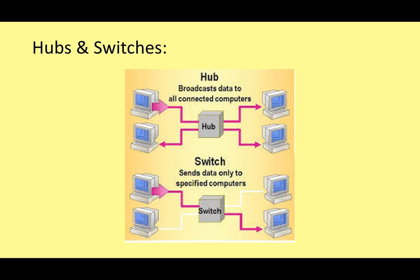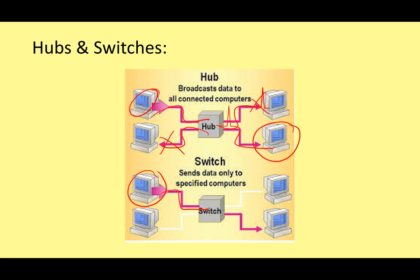Looking at a diagram to illustrate: with a hub, a computer sends data, it reaches the hub, and the hub - being a dumb device - sends it to every single computer. The intended computer receives it, but all other computers must filter out that data because it's not meant for them. With a switch, a computer sends the data, the switch reads it and identifies the destination address, then sends it directly to that computer only. The other computers connected to it do not receive the data. Hubs are dumb; switches are smart.